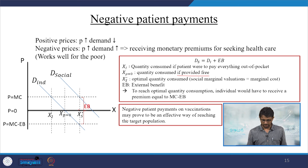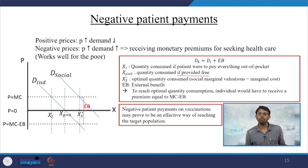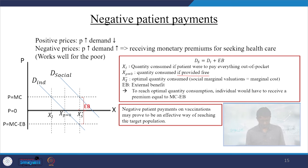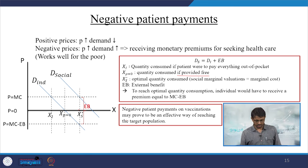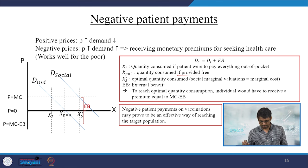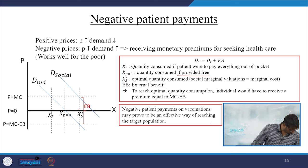EB is the external benefit. To reach optimal quantity consumption, the individual would have to receive a premium equal to the difference between MC and EB. Therefore, negative patient payments on vaccinations may prove to be an effective way of reaching the target population. Further details can be found in unit number 7.